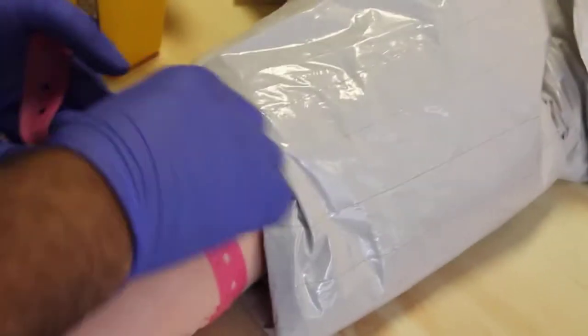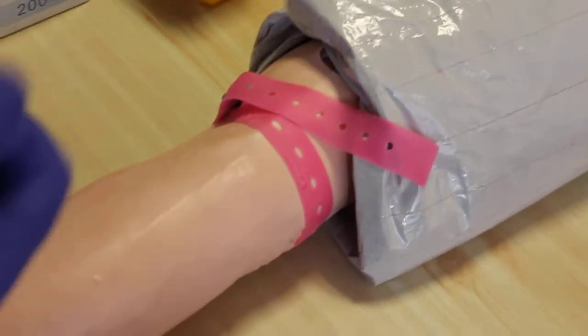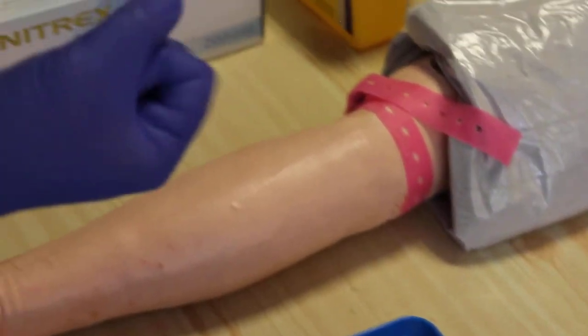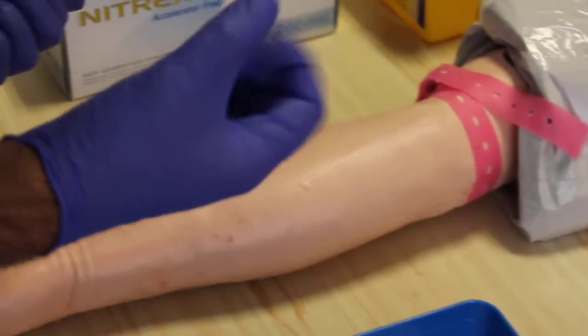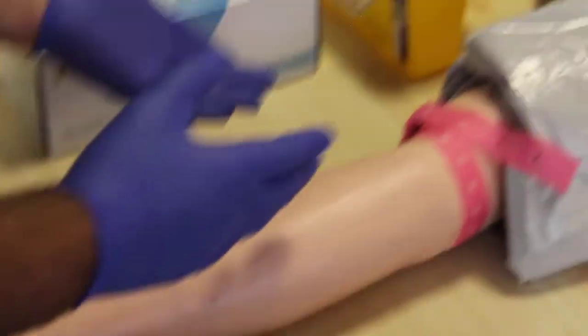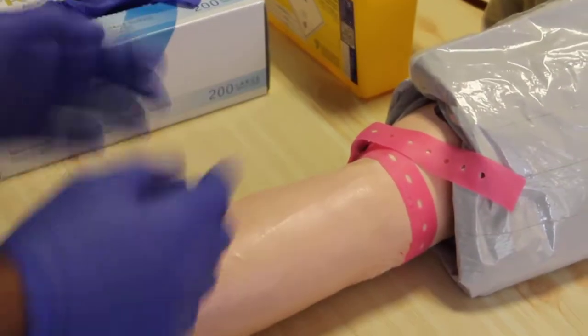You put the tourniquet around the arm of the patient. Ask them to clench their hands, close their fist a couple of times for the vein to get more prominent.